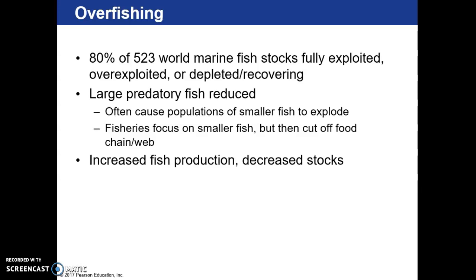If we cut off the food chain by overfishing smaller fish, those larger predatory fish aren't able to recover. We can't fish large fish because they're overfished, but we also need to be careful fishing smaller fish — even if abundant — to make sure enough remain in the ecosystem to help large fish recover.